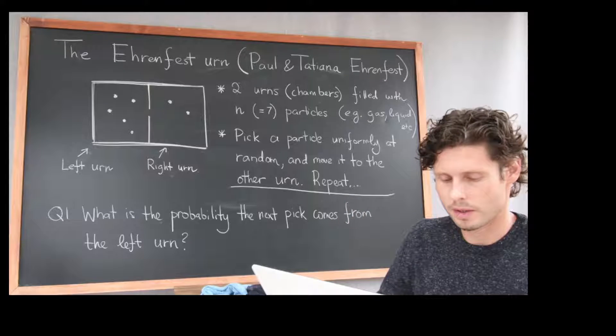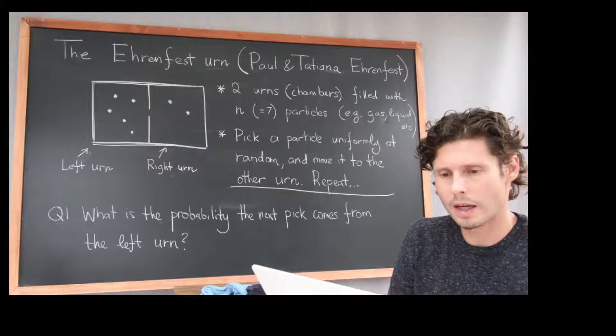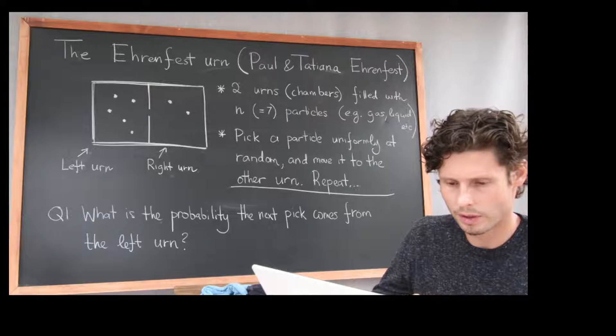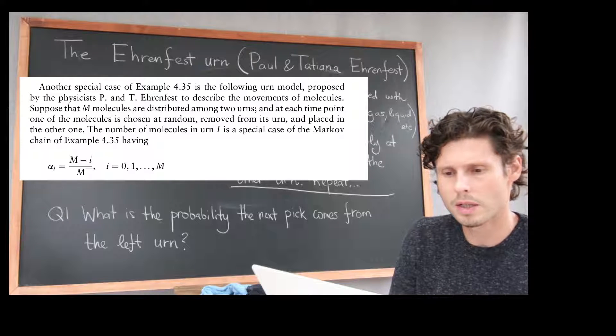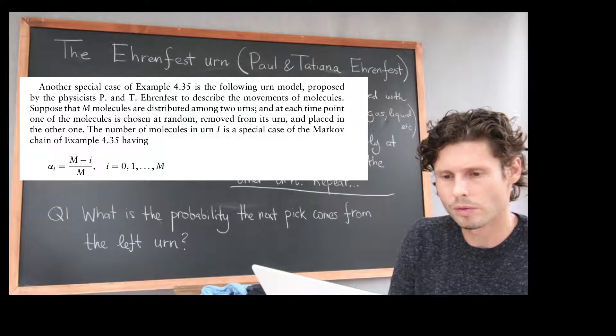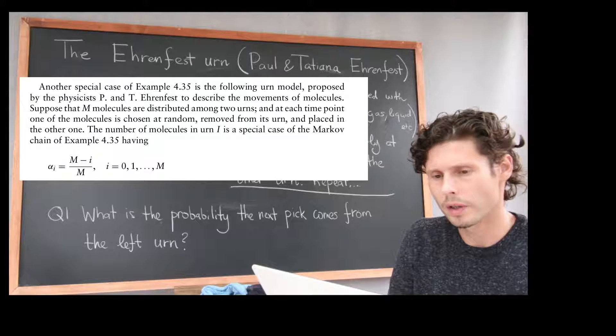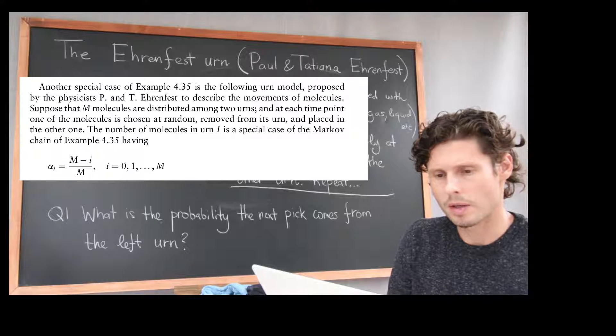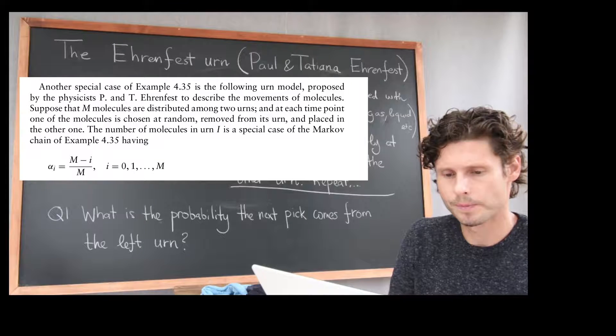The specific example I'm thinking of is on the board behind me. This is called the Ehrenfest model, due to Paul and Tatiana Ehrenfest, and in fact it appears in your book. This is chapter 4 on Markov chains, and I encourage you to read over example 4.35, which I think they call a random walk on a network. It is also a birth and death chain.